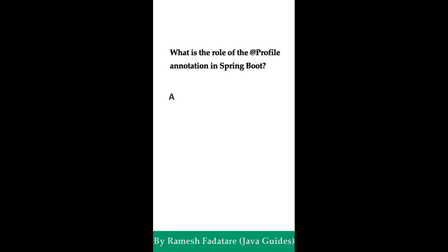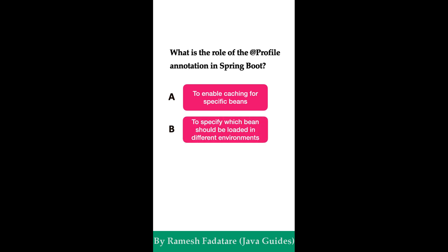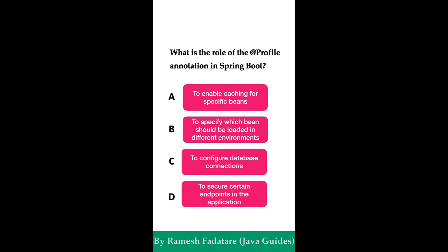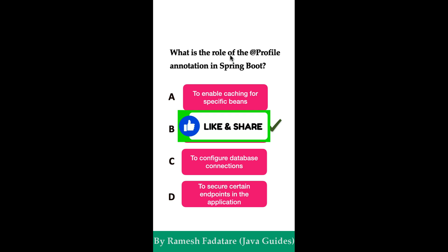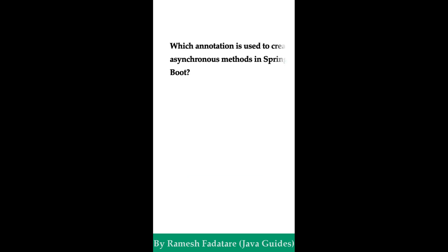What is the role of @Profile annotation in Spring Boot? Option A: to enable caching for specific beans. Option B: to specify which beans should be loaded in different environments. Option C: to secure certain endpoints in the application. The correct answer is option B. The @Profile annotation in Spring Boot is used to conditionally load beans based on the active profile. Profiles allow you to define different configurations for environments such as development, testing, and production, and only beans marked with the active profile will be loaded during application startup.